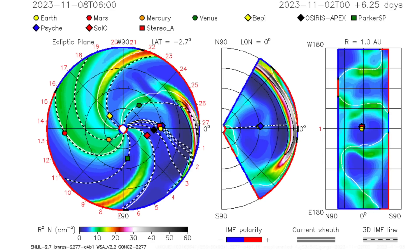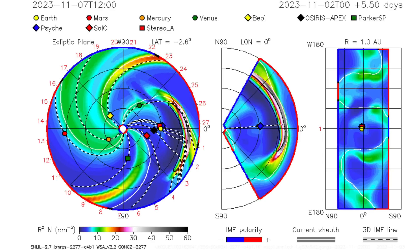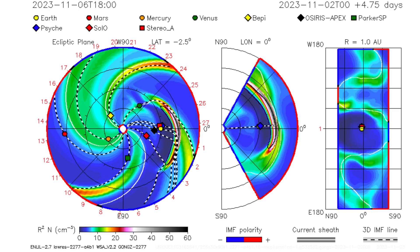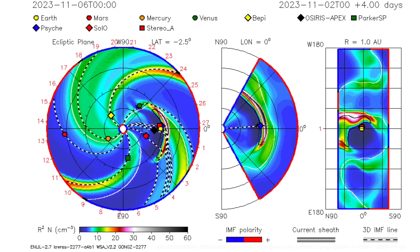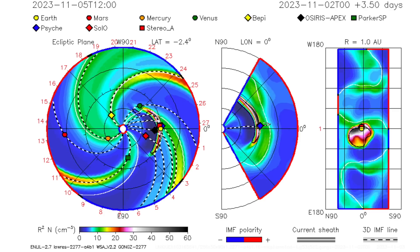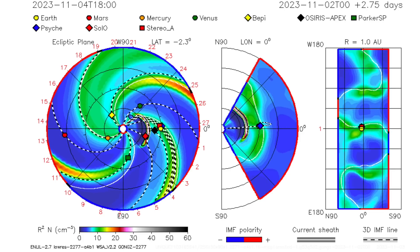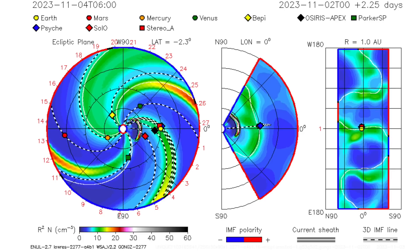Hey folks, we had a great request this morning to explain the Enlil spiral, so we're going to do exactly that. This is a program developed to project CME trajectories throughout the solar system once one has been released by the sun.